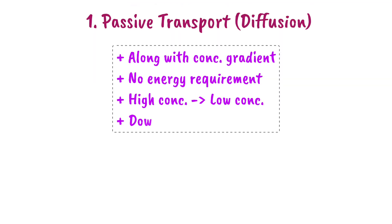First, passive transport. The transport of a substance along the concentration gradient without any requirement of energy is called passive transport. The substance moves from the region of high concentration to low concentration. That's why it is known as downhill movement or downhill diffusion.